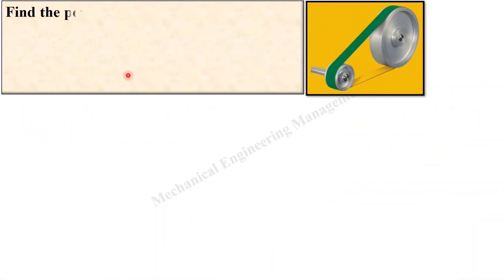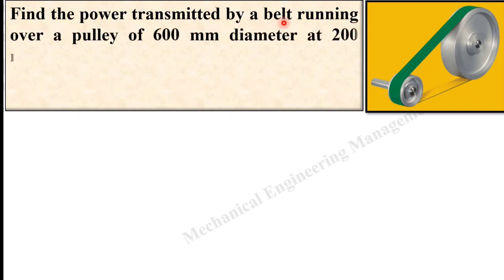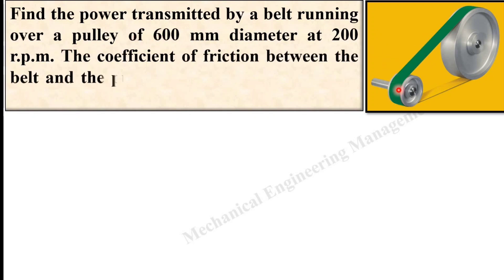Let us see first of all the description of the given problem and try to understand with the help of this figure. Find the power transmitted by a belt, here you can see this is the belt, running over a pulley 600 mm diameter at 200 rpm.